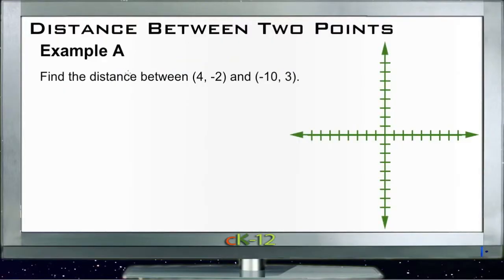Alright, let's take a look at the examples for distance between two points. For Example A, find the distance between the point (4, -2) and (-10, 3). We're going to use the Pythagorean theorem: a² + b² = c².